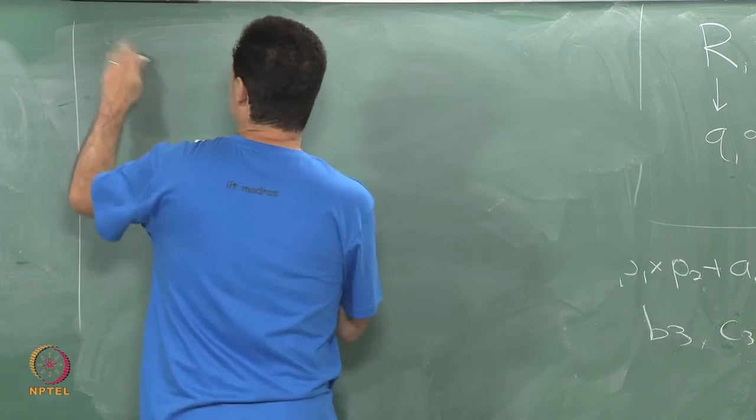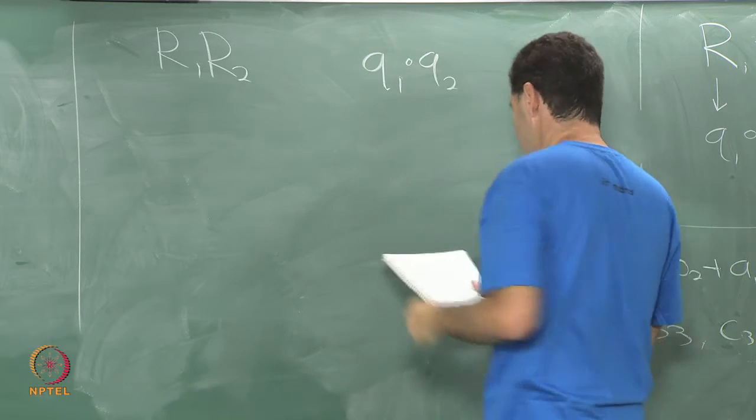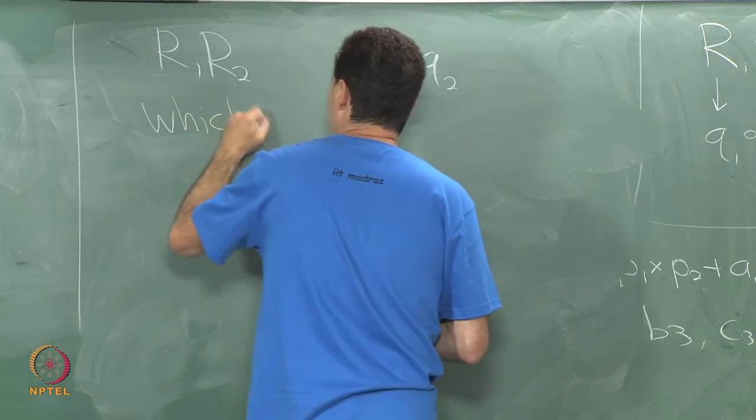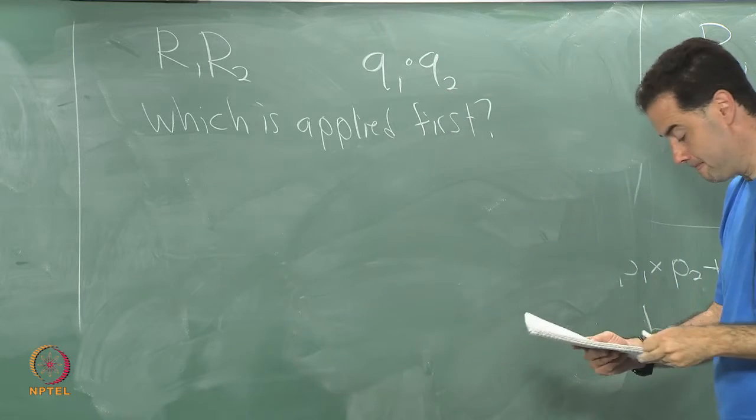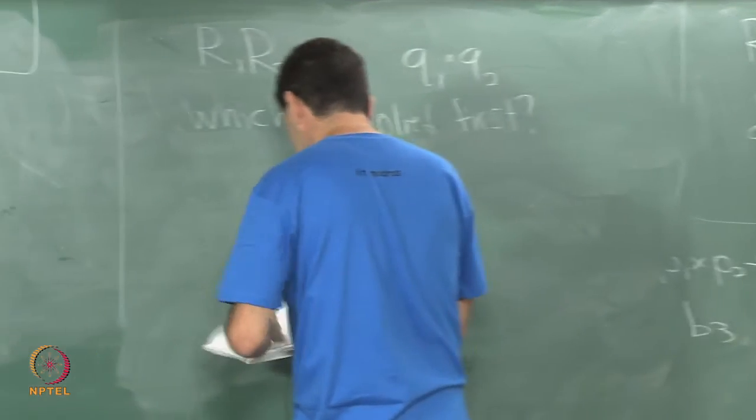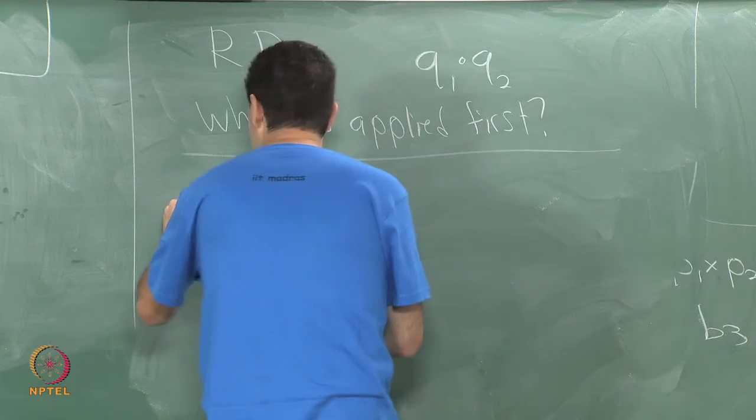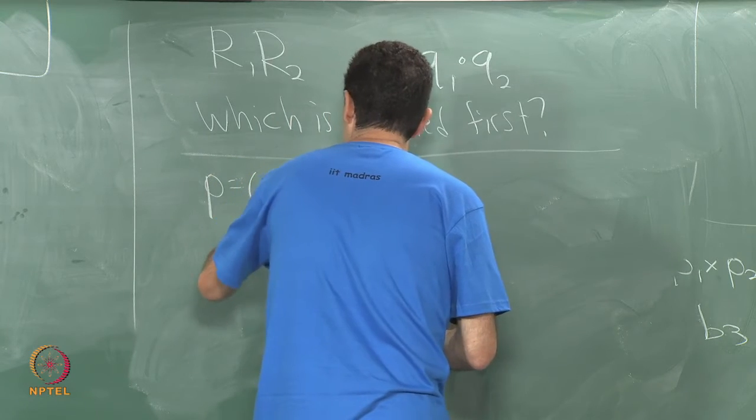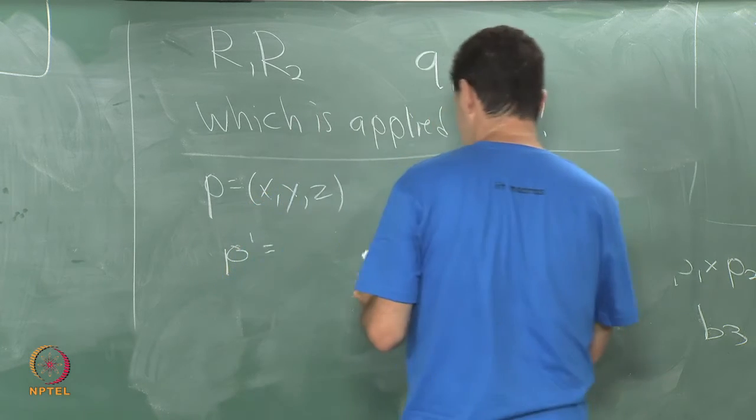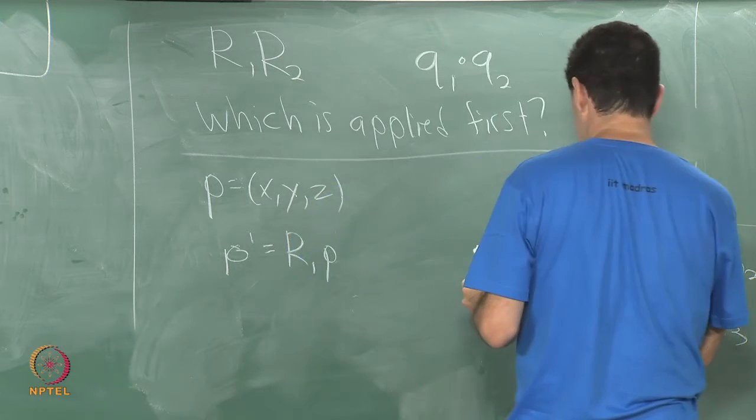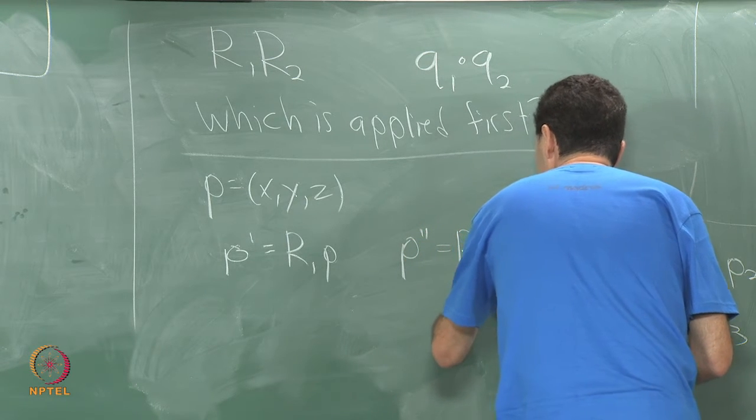We have a question of: if I have rotations R1, R2 or I have quaternions Q1, Q2, there is the interesting question of which is applied first right. For example, let us suppose I have some point p equals x, y, z and I calculate p prime equals R1 p and then I calculate p double prime equals R2 p prime.